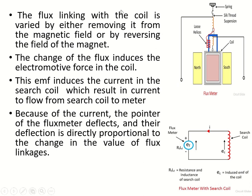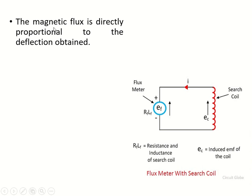The deflection of the pointer is proportional to the rate of change of flux linkage. The current flows from the search coil through the flux meter. Because of this current, the pointer connected to the coil deflects, and the magnetic flux is directly proportional to the deflection obtained.